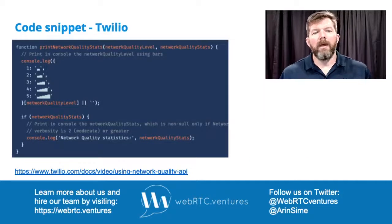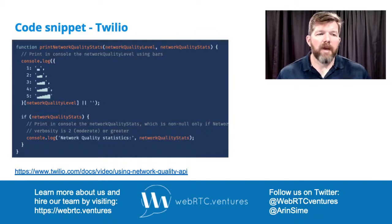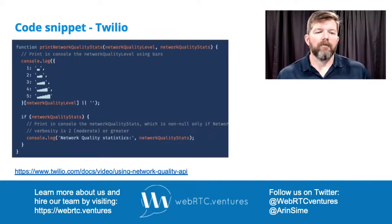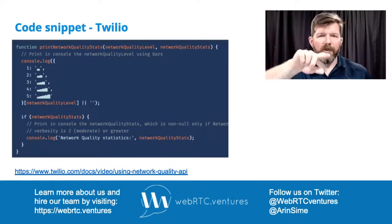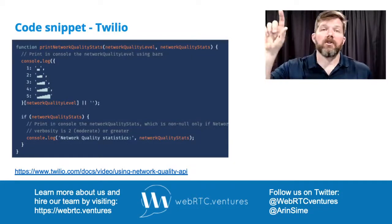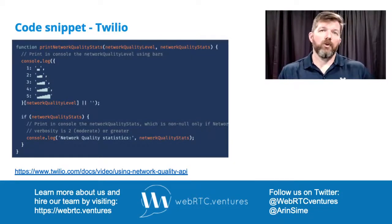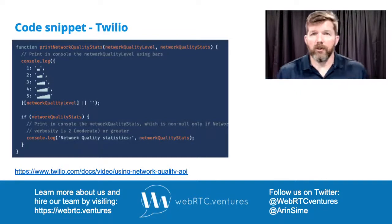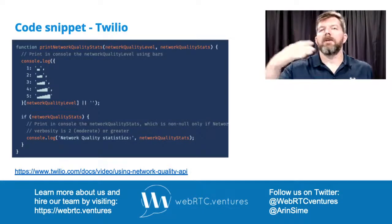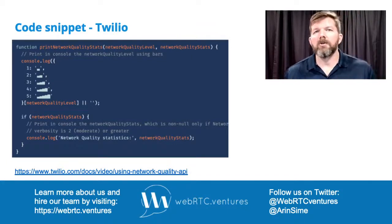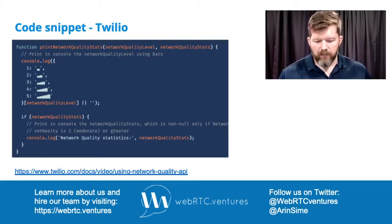Another example: Twilio has a Network Quality API, so if you're using Twilio as your CPaaS you might use something like this to detect the strength of the connection. In this code example from their documentation, it shows how you might print out something like the five bars of a cell phone indicating connection strength. This is something you could use throughout the call — maybe the call started out with really strong connectivity but then started to drop — providing a visual indicator to users based on an ongoing check throughout the call, or you can use it prior to the call as part of your pre-call test.